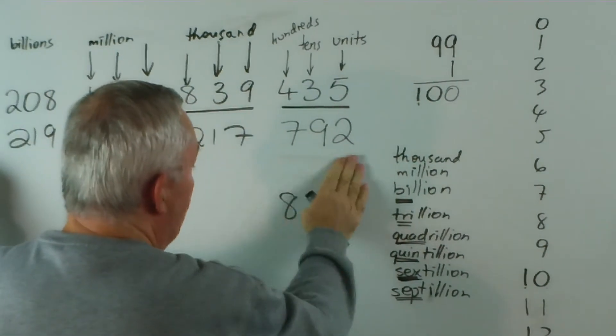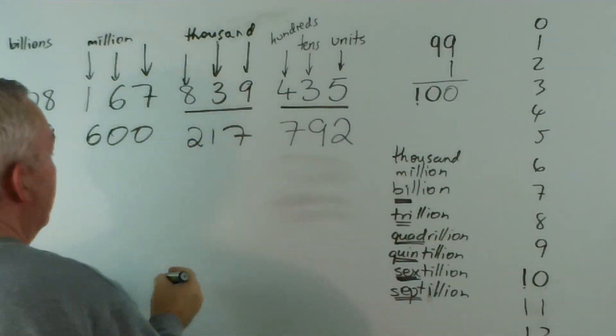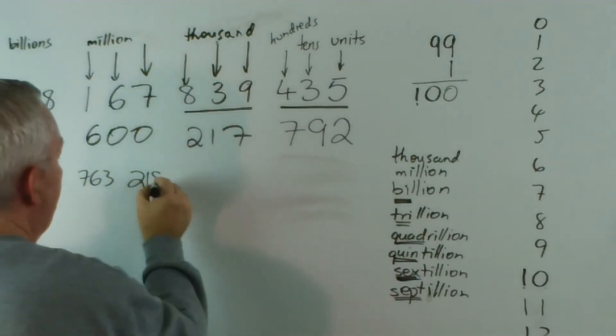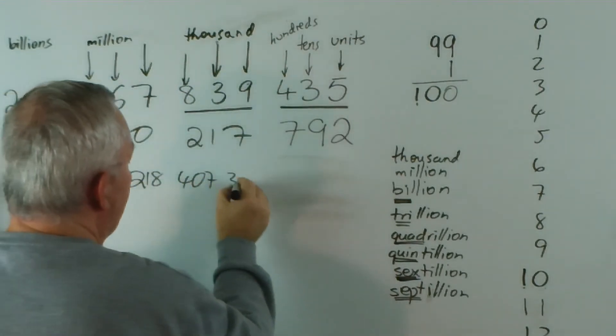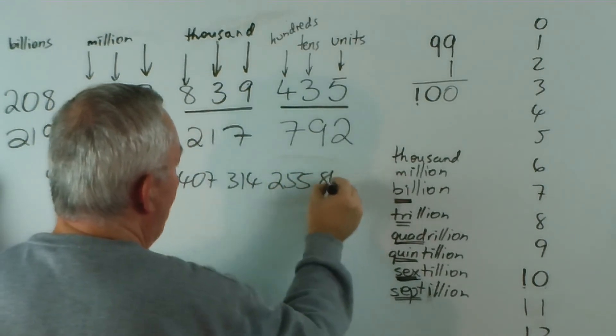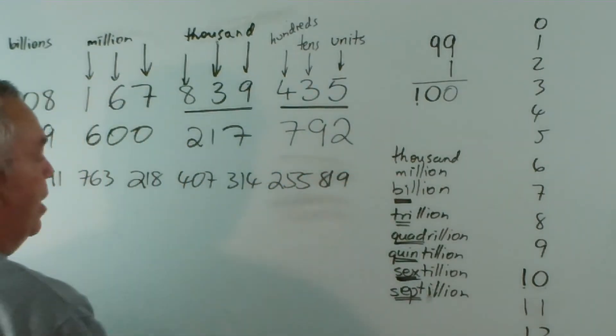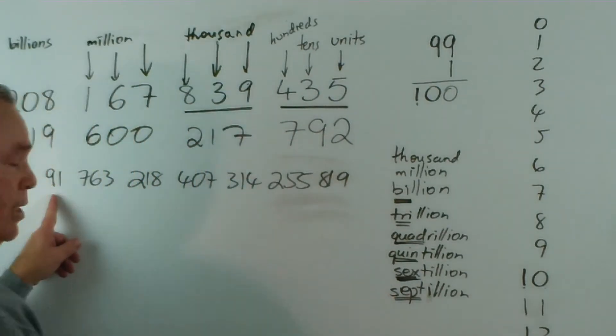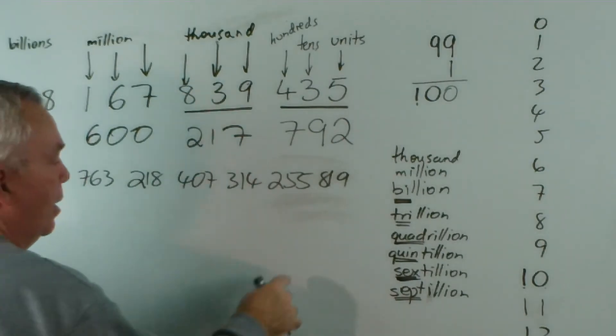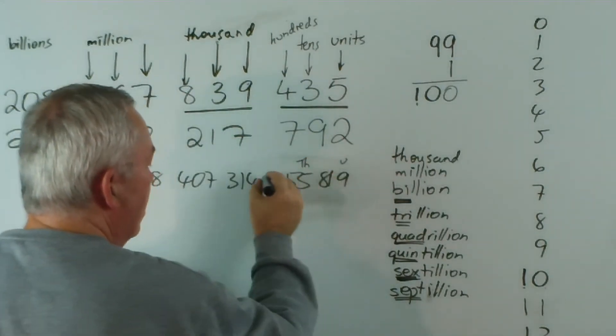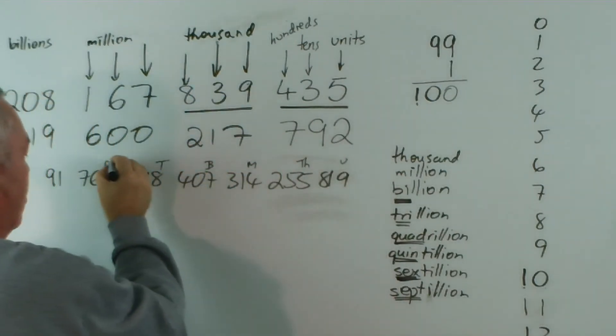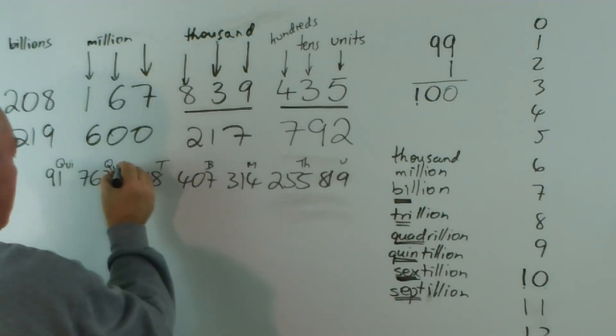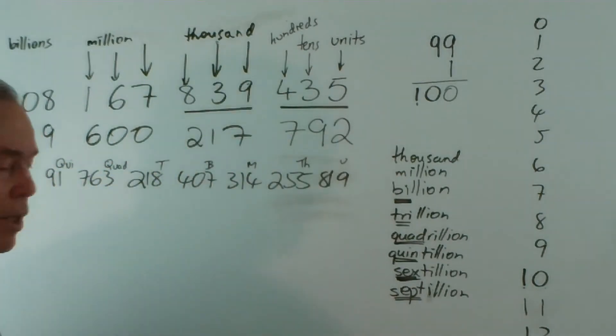So if I rub this off and write a very large number—I'm going to write a little bit smaller—and I write 91763218407314255819. So if that's our number, all that I need to do is to tick back—because just looking at this end, I can't tell what I'm doing—be my units, my thousands, my millions, billions, trillions, quadrillions, and quintillions.